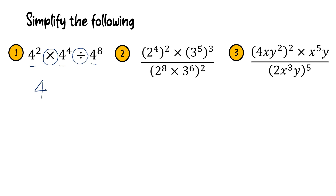For the index: multiplied means the index will be plus, and divide will change to minus. So: 2 plus 4 is 6, then 6 minus 8 is negative 2. If you get a negative index, the final answer changes to 1 over. So the final answer is 1 over 4 to the power of 2.